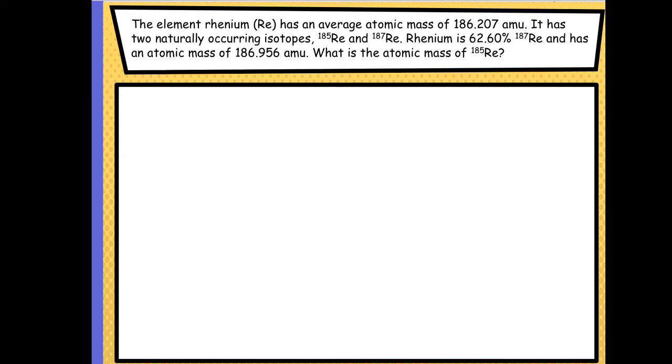Okay, the element rhenium has an average atomic mass of 186.207, so I'm going to underline that. It has two naturally occurring isotopes, 185 and 187.